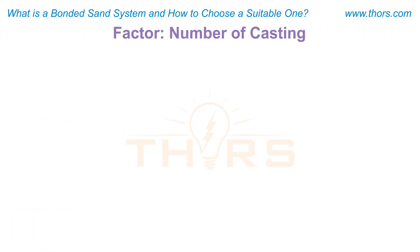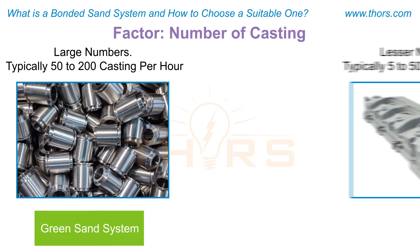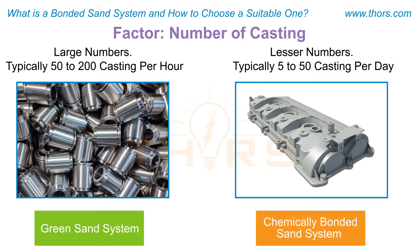The second factor is the number of castings required. To produce a large number of castings, typically 50 to 200 castings per hour, the green sand system is preferred. To produce a lesser number of castings, typically 5 to 50 castings per day, the chemically bonded sand system is preferred.